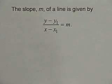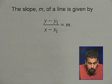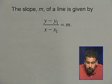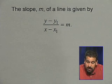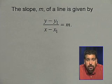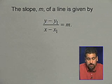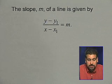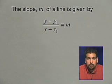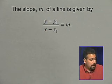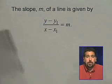Let's get started by reviewing the slope formula. The slope m of a line is given by: y minus y1 over x minus x1 equals the slope, where x1, y1 is any fixed point on our given line. If we take this equation and multiply both sides by x minus x1, what results is the equation of a line. Let's look at the point-slope form.